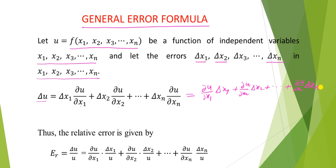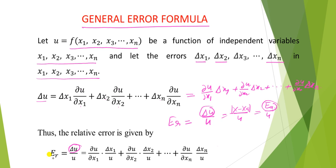The relative error er is equal to delta u upon u, where delta u is the absolute error — that is x minus xa upon u, so absolute error is delta u. Therefore relative error er equals delta u upon u, and since delta u equals del u by del x1 times delta x1 plus del u by del x2 times delta x2 plus up to del u by del xn times delta xn, dividing this expression by u gives del u by del x1 into delta x1 upon u, plus del u by del x2 into delta x2 upon u, plus up to del u by del xn into delta xn upon u.